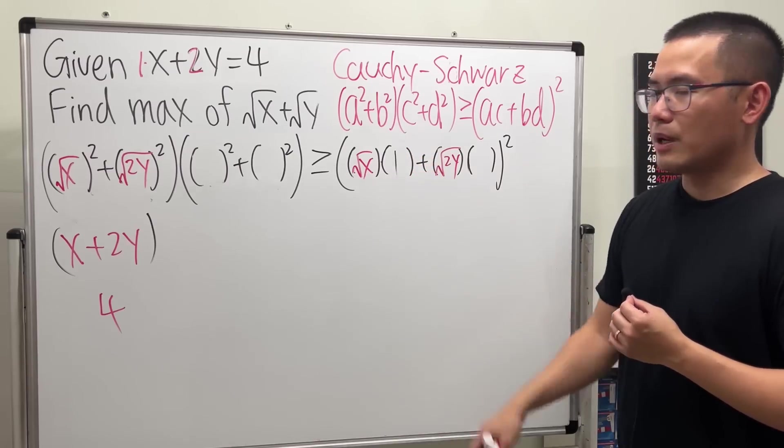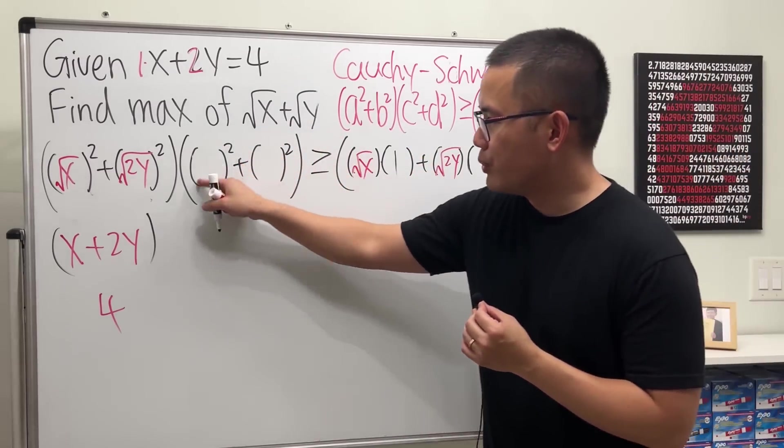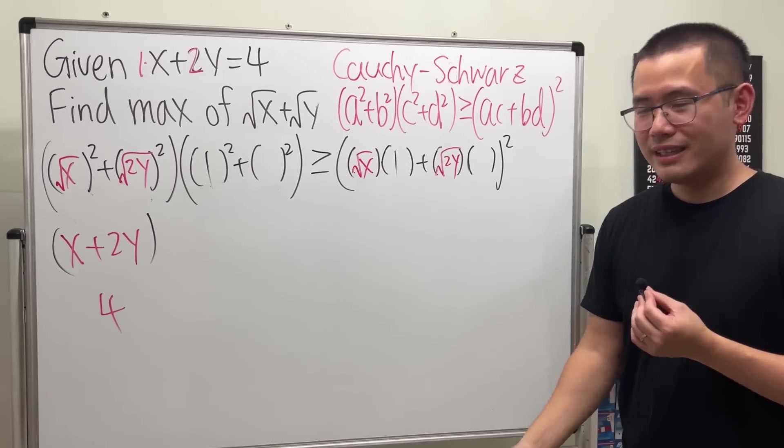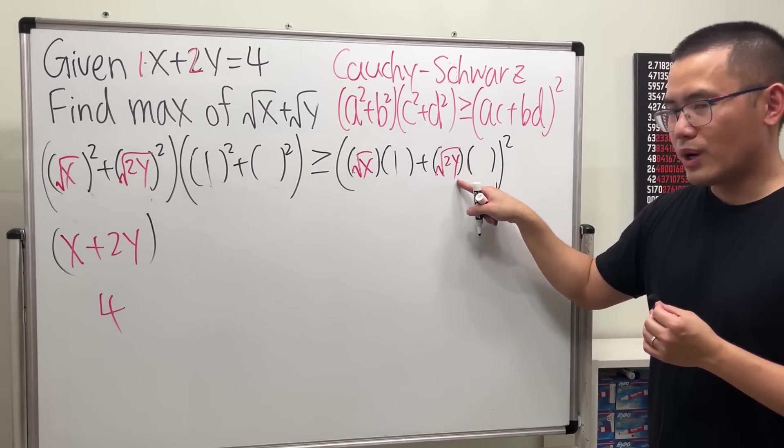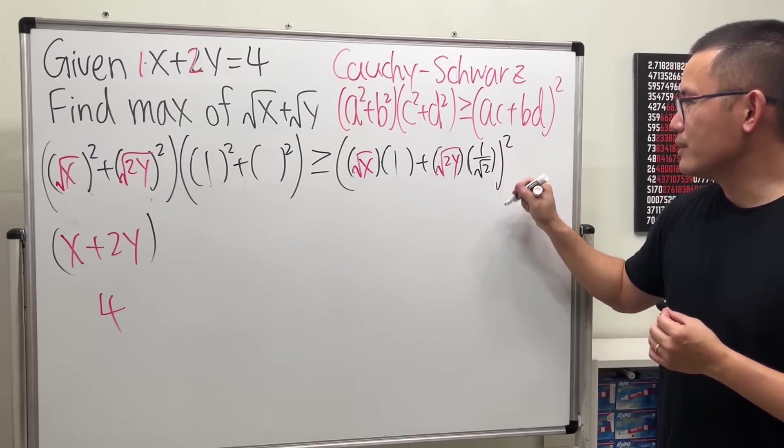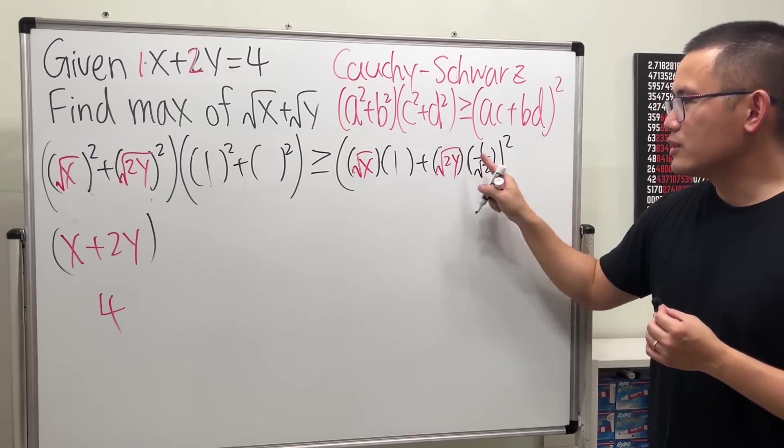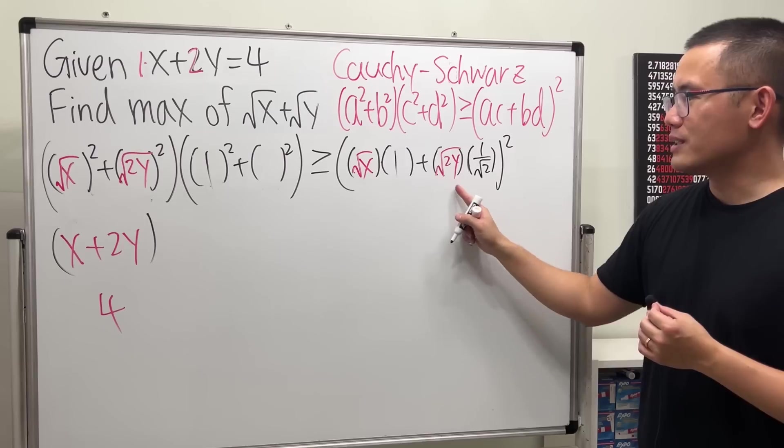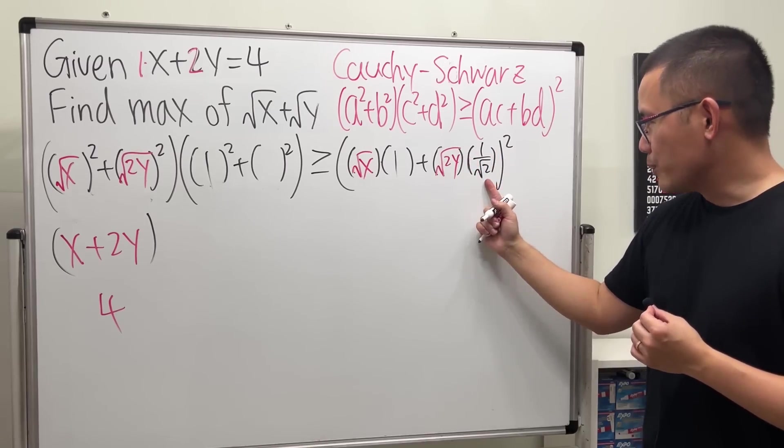That means put down the 1 right here. Likewise, we have square root of 2 times y. This time, put down 1 over square root of 2. So, the 2 and 2 will cancel in the square root. And we will end up with square root of y. Once we put this down, we come here and put down 1 over square root of 2.